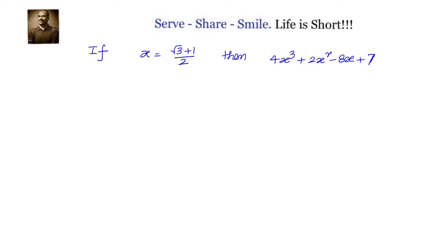If x equals the square root of 3 plus 1, divided by 2, then find the value of 4x cubed plus 2x squared minus 8x plus 7. We can solve this problem in more than one method, and in this video we will try to solve it using one of the methods which seems to be the simplest one.